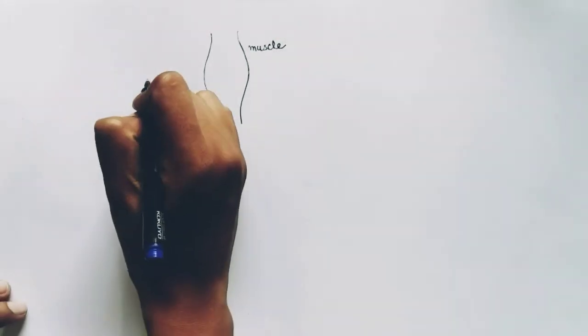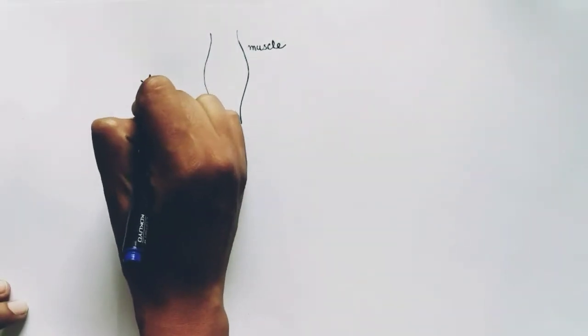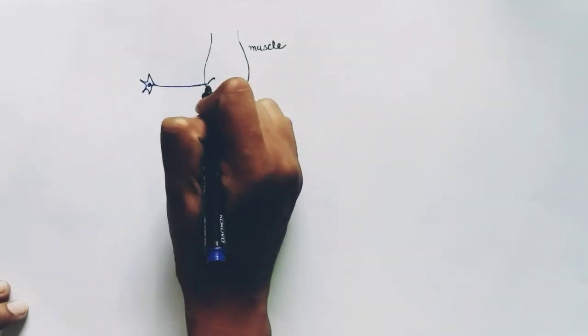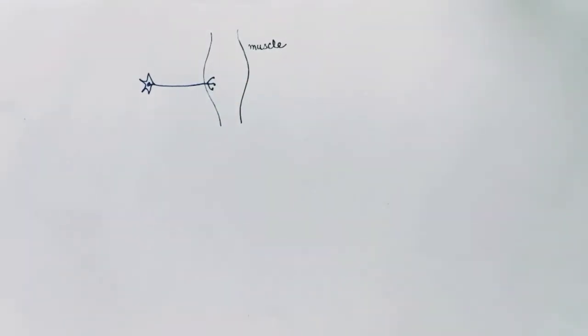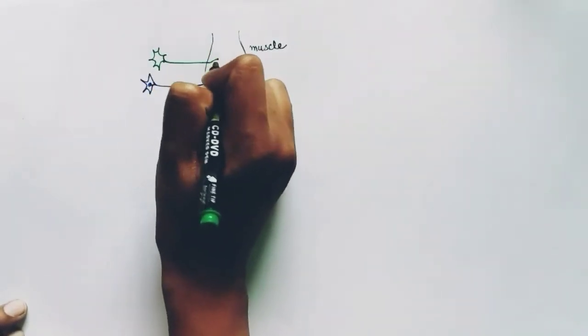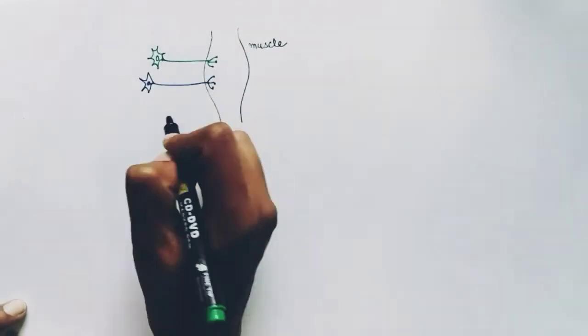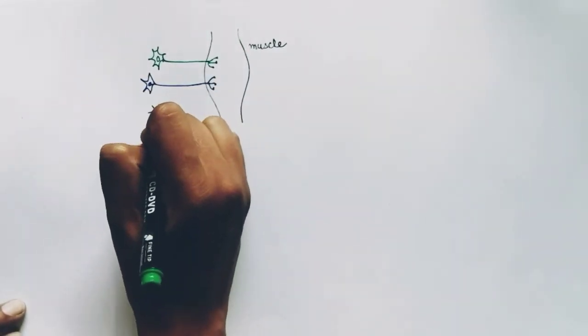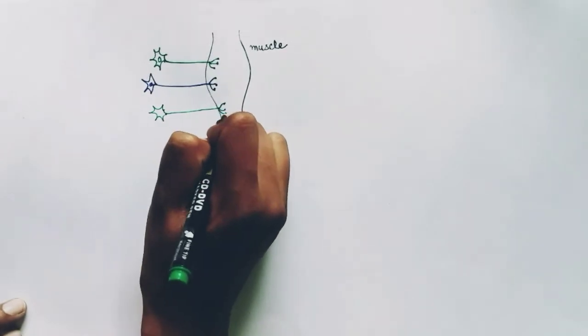So this is the muscle and I am drawing three motor neurons. This is the motor neuron which is affected by the polio virus and it cannot carry the signals. The green motor neurons beside the polio-affected neuron are the healthy motor neurons.